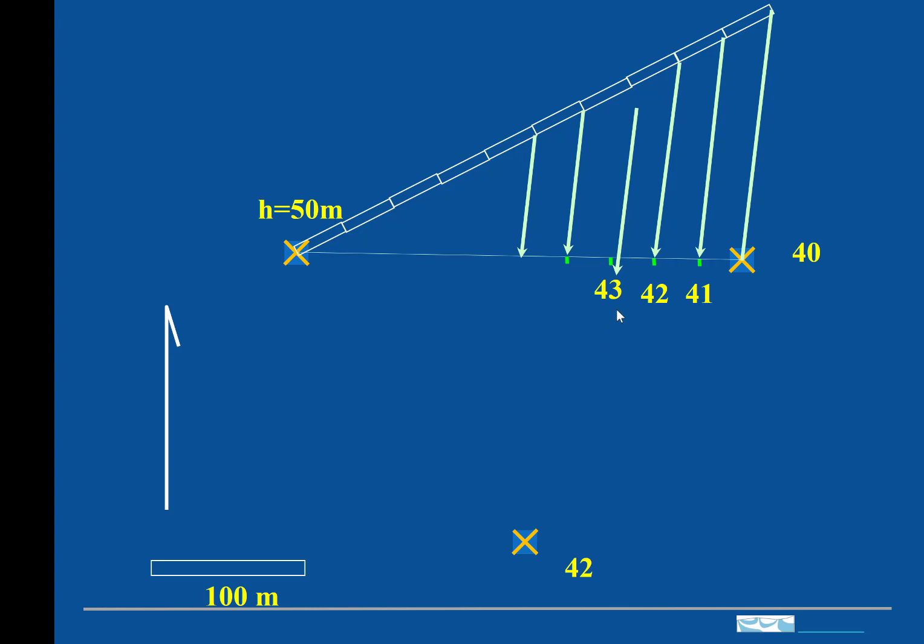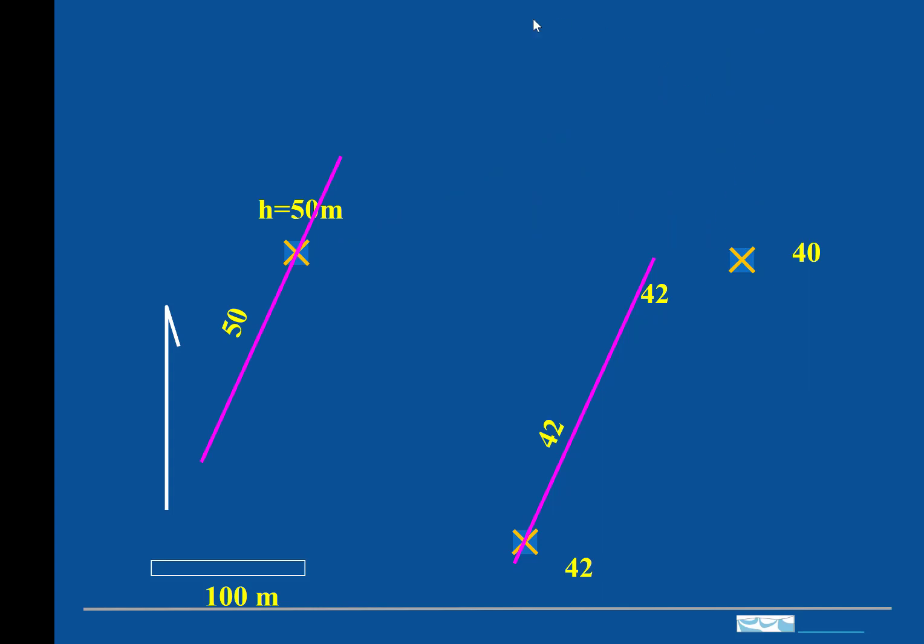And we know then that the head contour of 42 will be on those two points. So we can just draw that in. So this is a line of equal head.